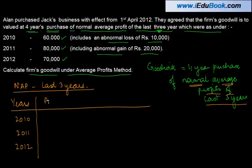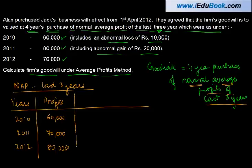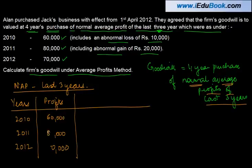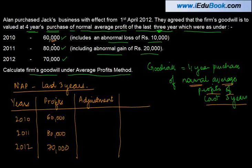The profits we have are 60,000; 80,000; and 70,000. These are not the normal profits that the business earns, because the 60,000 profit for 2010 includes an abnormal loss of 10,000.